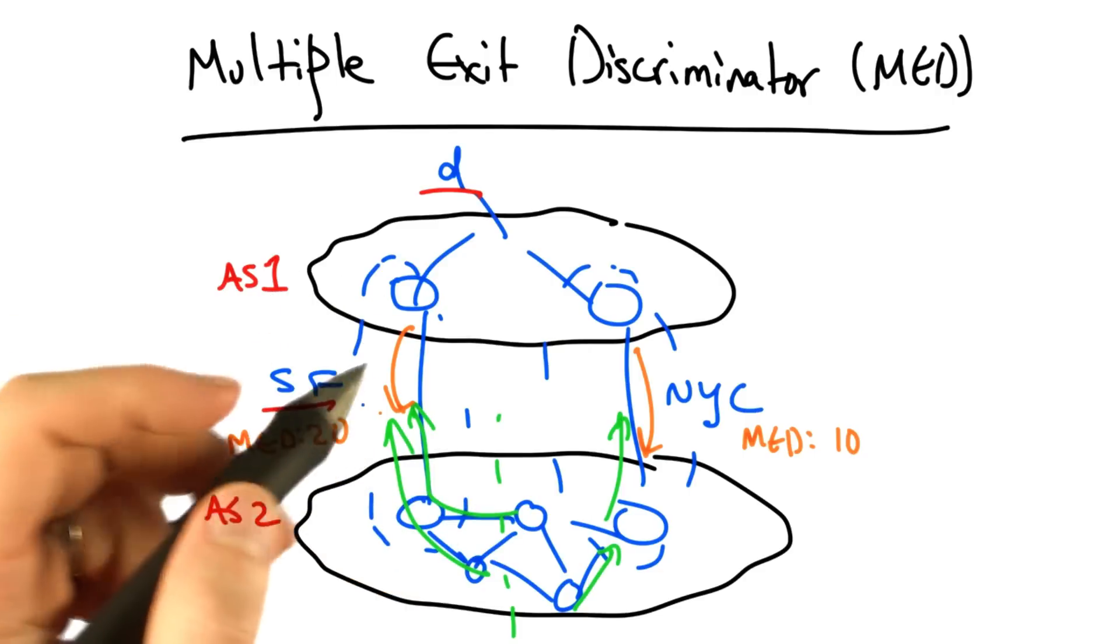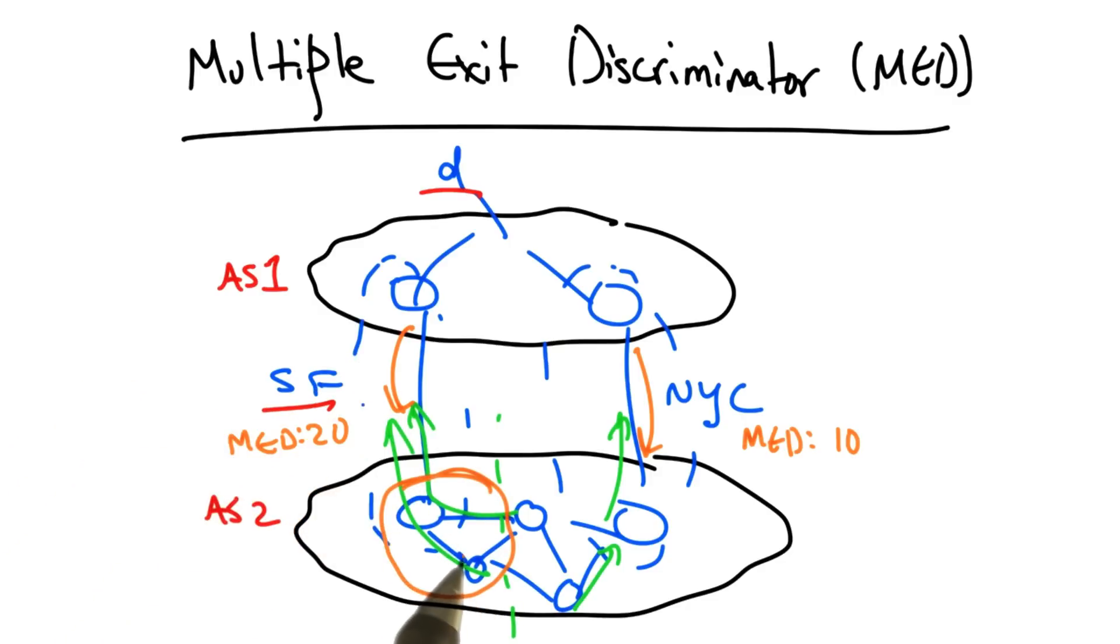Then instead of performing hot potato routing, all routers that would ordinarily be closer to the San Francisco egress would instead pick the route learned via the New York egress, because the preference for a lower MED value comes before the preference for a next hop with the lower IGP path cost. So all these routes would instead be carried over AS2's backbone network and exit via New York.